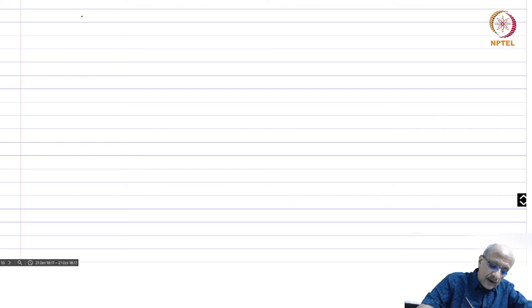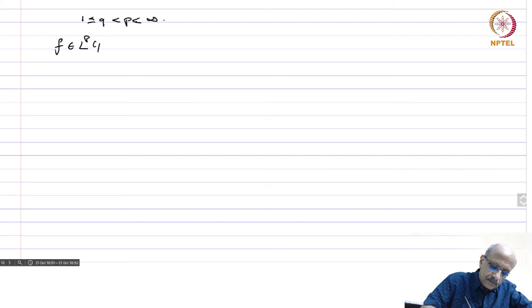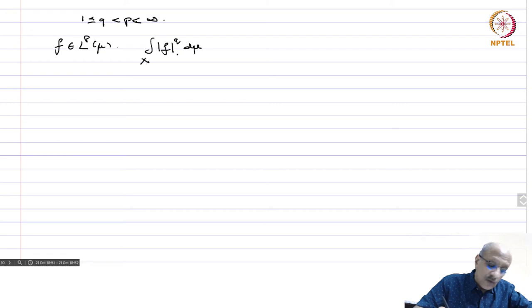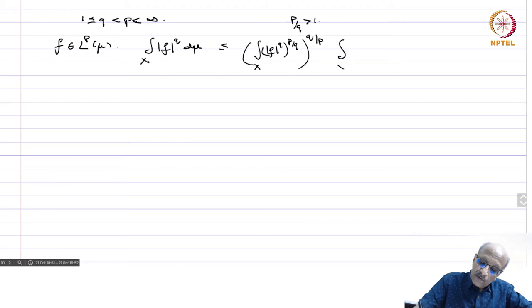Now let us prove it for 1 ≤ q < p < ∞. Let f be in Lp(μ). We want to show ∫|f|^q dμ is finite. We apply Hölder's inequality with first function |f|^q and second function 1. Since q < p, p/q > 1, so we can apply Hölder's inequality with index p/q. This gives ∫|f|^q dμ ≤ (∫|f|^(q·p/q) dμ)^(q/p) · (∫1 dμ)^(1 − q/p), which equals (∫|f|^p dμ)^(q/p) · μ(X)^(1 − q/p).